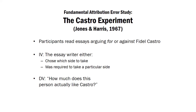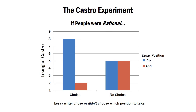If people were rational, here's the expected pattern: when you know the person had a choice over which position to take, you should use the essay as an indication of their internal characteristics. But in the no-choice condition, the topic of the essay should have little to do with what you think the person really thinks — if you've been told the person had no say over which position to take, it's really an irrelevant predictor of the person's real opinion.